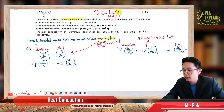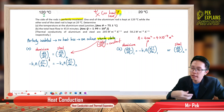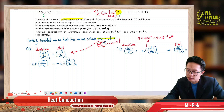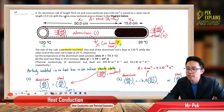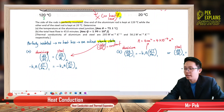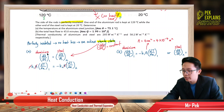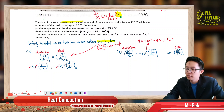Applying dQ/dt = −K·A·(dT/dx): for aluminium we have K₁ and temperature gradient 1; for steel we have K₂ and temperature gradient 2. Since the cross-sectional areas are the same — A₁ equals A₂ — we can cancel out the cross-sectional area from both sides. The negative signs also cancel, so no more negative sign remains.